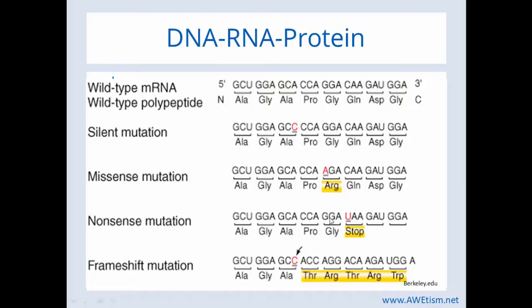Another mutation is called a nonsense mutation. You can see here we have a U in the base pair where in the original RNA we had a C. Now what the protein does is it stops — it's coded to stop — so it stops making any more protein. The last mutation I'm covering is a frameshift mutation. There's a mutation where a C was inserted where in the original RNA it was an A, and that shifted everything. The C was inserted and pushed everything down, so look at all these resulting different amino acids that are incorporated into the protein.